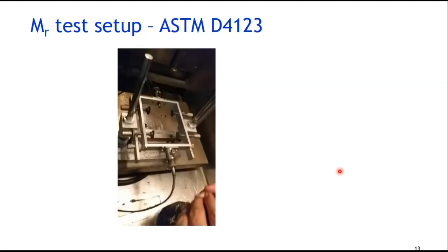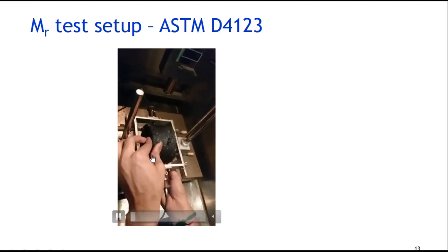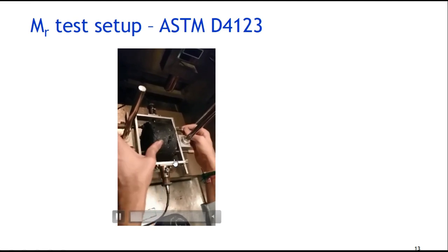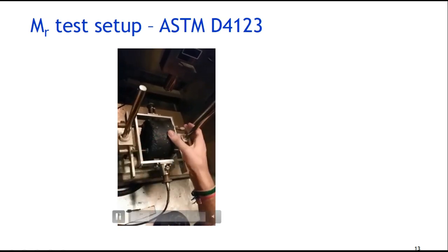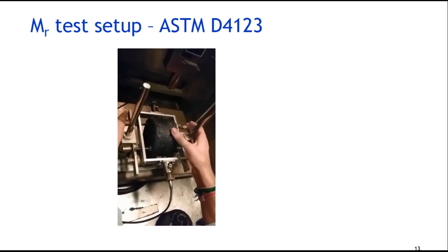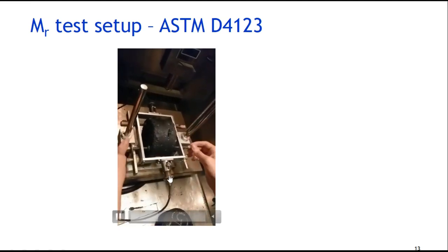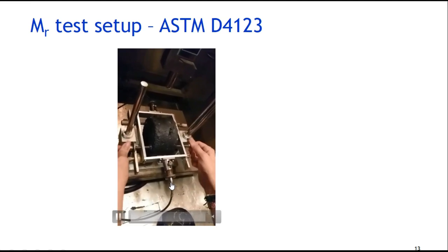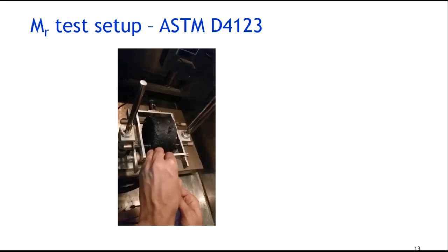This is the resilient modulus jig. The specimen is placed in the jig and kept in position using four screws so that it does not move during loading. The LVDT is used to measure the deformation. You can use two LVDTs for horizontal deformation and two LVDTs for vertical deformation.